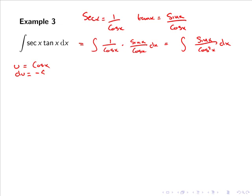Or simply, −du = sin x dx. Hence our integral can be rewritten as the integral of sin x dx (i.e., −du) all over cos²x, or simply u².